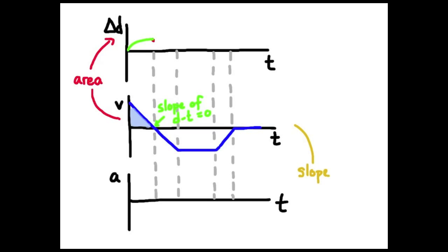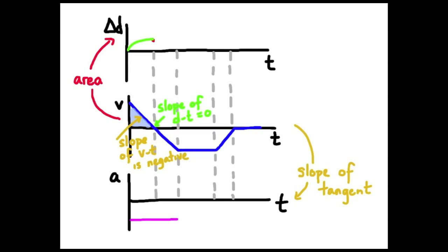For the first segment of the AT graph — going from VT to AT, it's the slope of the tangent line. For that first segment, the VT graph slope is negative, meaning acceleration is negative, and that continues all the way to the second dashed line. There's my pink line for the AT graph: a constant negative value.